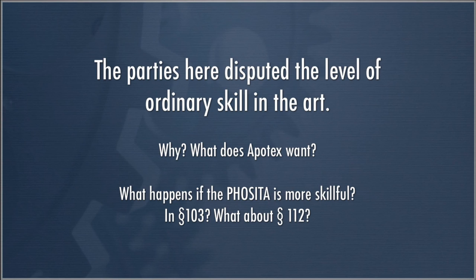There's an interesting interplay because we also use the person of ordinary skill in the art for Section 112 analysis. Conversely, if you have a skillful person having ordinary skill in the art for Section 112 purposes, that means you don't need as much enablement. A more skillful person of ordinary skill in the art will be able to fill in more gaps, they'll be more educated, they'll know more. Therefore, the amount of disclosure required to teach them how to enable the invention will be less.